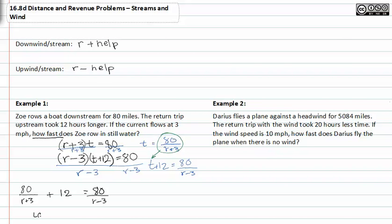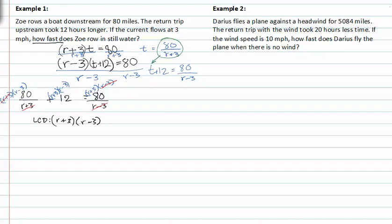Our LCD is equal to r plus three times r minus three. Multiplying through and dividing out the common factors clears the denominators. Foiling r plus three times r minus three gives r squared minus nine.